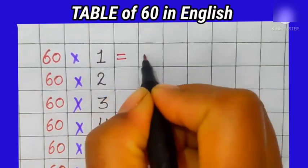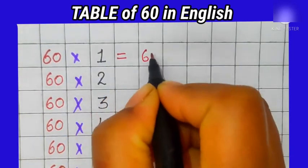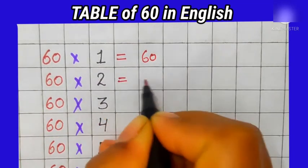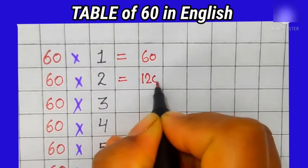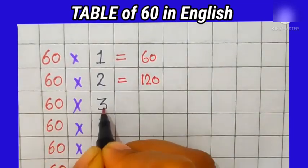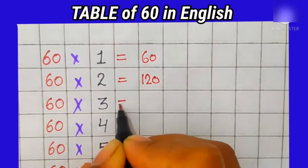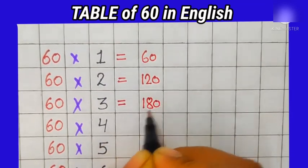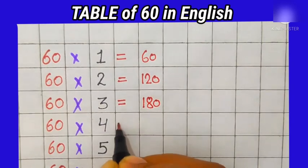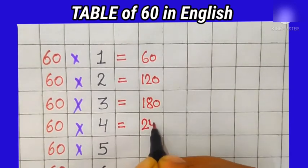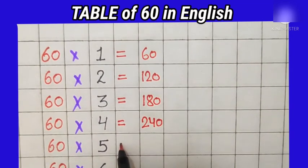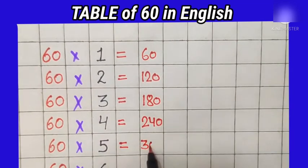61's are 60, 62's are 120, 63's are 180, 64's are 240, 65's are 300.